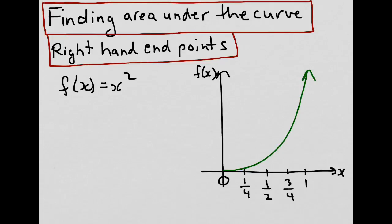Then let's draw a vertical line from the right-hand part of our interval up to the curve and make a point which would represent the right-hand endpoint. Then let's form a rectangle with our adjacent interval. We repeat the process for all the other right-hand endpoints of our subintervals — for three quarters, the right-hand endpoint would be here, forming a rectangle with the adjacent subinterval.